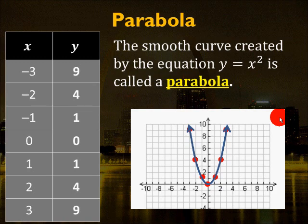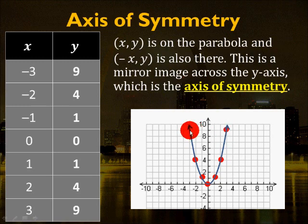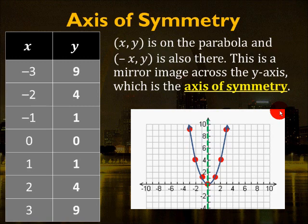This is called a parabola. You notice that it has a U-shape, and that's going to be a shape you'll be quite familiar with after this lesson. The axis of symmetry of the parabola is basically where the middle of the parabola is. So if we have x, y on the parabola, then negative x, y is also there. For example, 3, 9 and negative 3, 9; 2, 4 and negative 2, 4. This is a mirror image across the y-axis. In this case, the y-axis is the axis of symmetry — it's the center of the parabola, where each side is a reflection of the other.